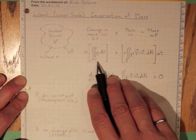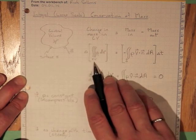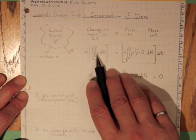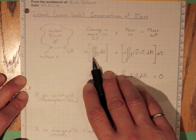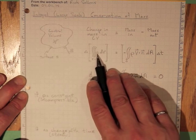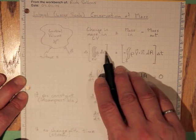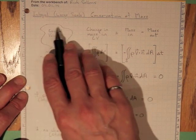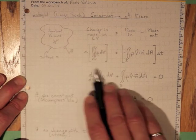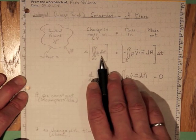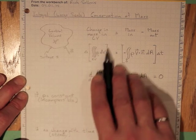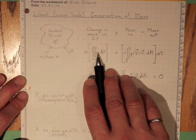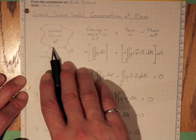So the change in the integral over the entire volume, so this is a triple integral over the volume of the density times volume, because the density may vary with location in the volume. That's the change in the mass in the control volume because this thing inside the square brackets is the mass inside that control volume.